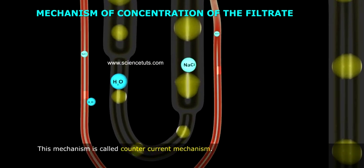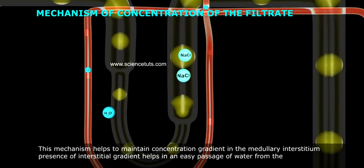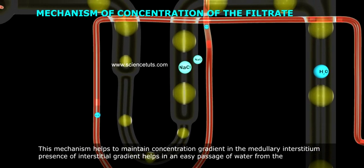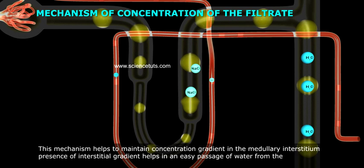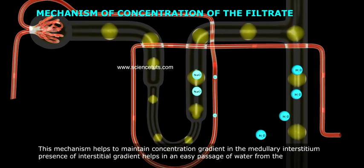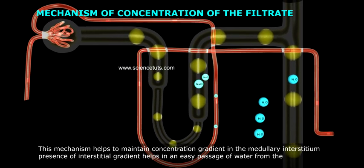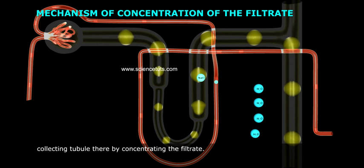This mechanism is called the countercurrent mechanism. This mechanism helps to maintain the concentration gradient in the medullary interstitium. Presence of interstitial gradient helps in an easy passage of water from the collecting tubule, thereby concentrating the filtrate.